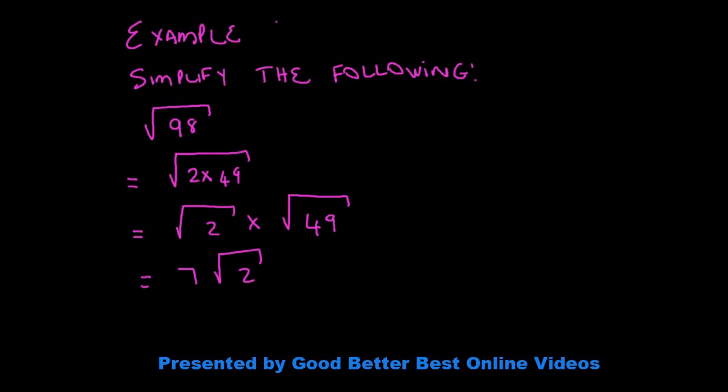Now let's look at the simplification of thirds. We have the square root of 98. Whatever number they give you, try to find a factor that is square-rootable. The factors of 98 include 49 times 2. 49 can be square rooted, 2 cannot. So we split it into the square root of 2 times the square root of 49. The square root of 49 is 7, and we are left with the square root of 2. So our answer in surd form is 7 square root 2.